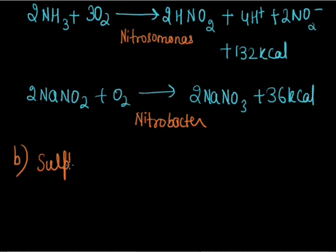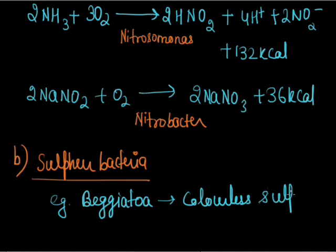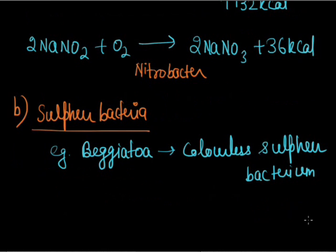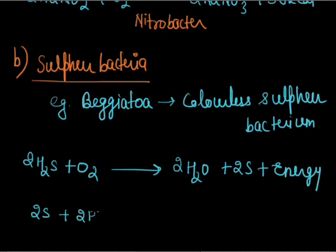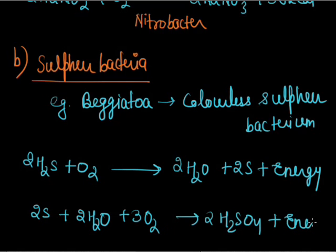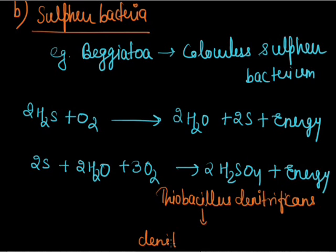The second type is sulphur bacteria. An example is Beggiatoa, a colorless sulphur bacteria which oxidizes hydrogen sulphide to water and sulphur. The reaction: 2 H₂S + O₂ → 2 S + 2 H₂O. This elemental sulphur is then converted into sulphuric acid and energy. This further oxidation is carried out by Thiobacillus denitrificans — these are denitrifying sulphur bacteria.